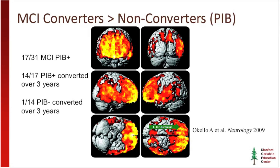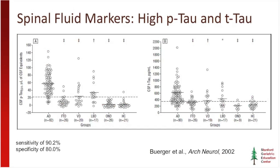Moving on to spinal fluid biomarkers. These have been studied for a long time — here's a study going back to 2002. The general finding when you analyze spinal fluid via lumbar puncture in Alzheimer's patients is that tau levels are high and beta-amyloid levels are low. Somewhat counterintuitively, beta-amyloid is low in the CSF — the hand-waving explanation is that beta-amyloid is being aggregated into amyloid plaques. Regardless, elevated tau and reduced beta-amyloid in the spinal fluid is the typical finding.